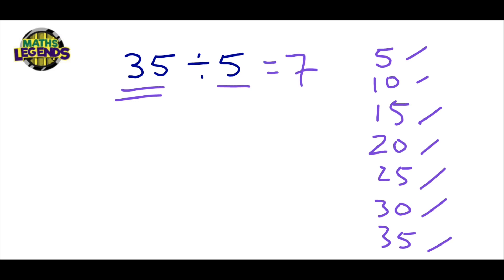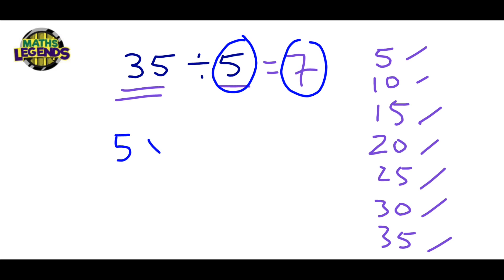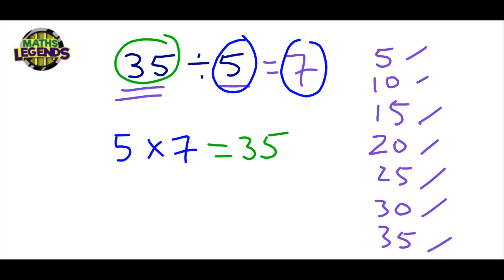On this example, we're also going to explain how you can check your answer. Division is the opposite of multiplication. So if we multiply the two numbers five and seven — five times seven — we should get 35. Five times seven is 35, so that's our check.